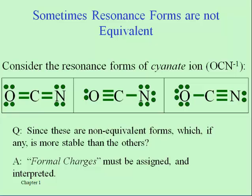Now, once we draw those structures, it's not always true that they're equally equivalent for describing what the molecule really looks like. In nitrate, all three of those structures are essentially the same — one double bond between nitrogen and oxygen and then the two single bonds.